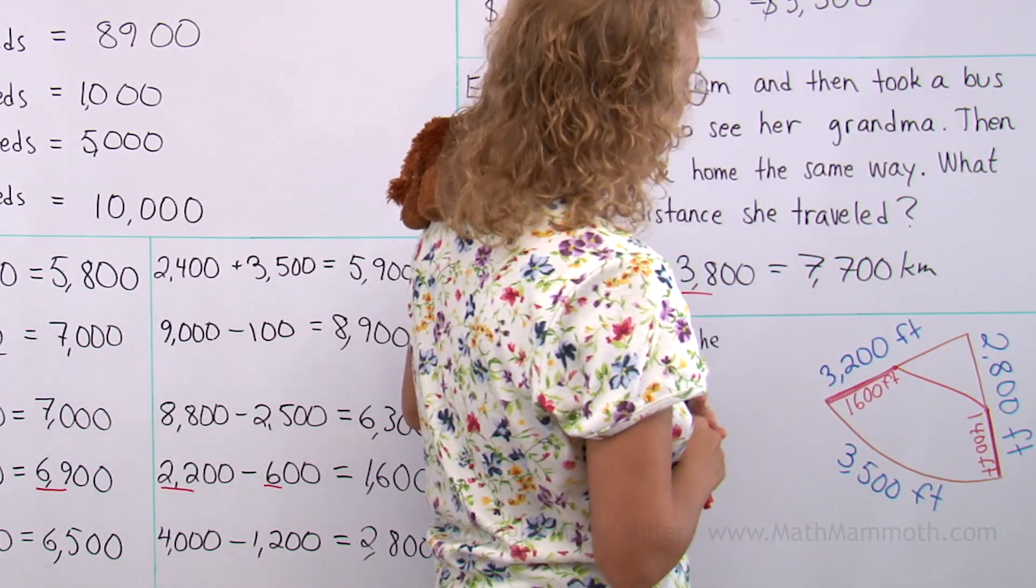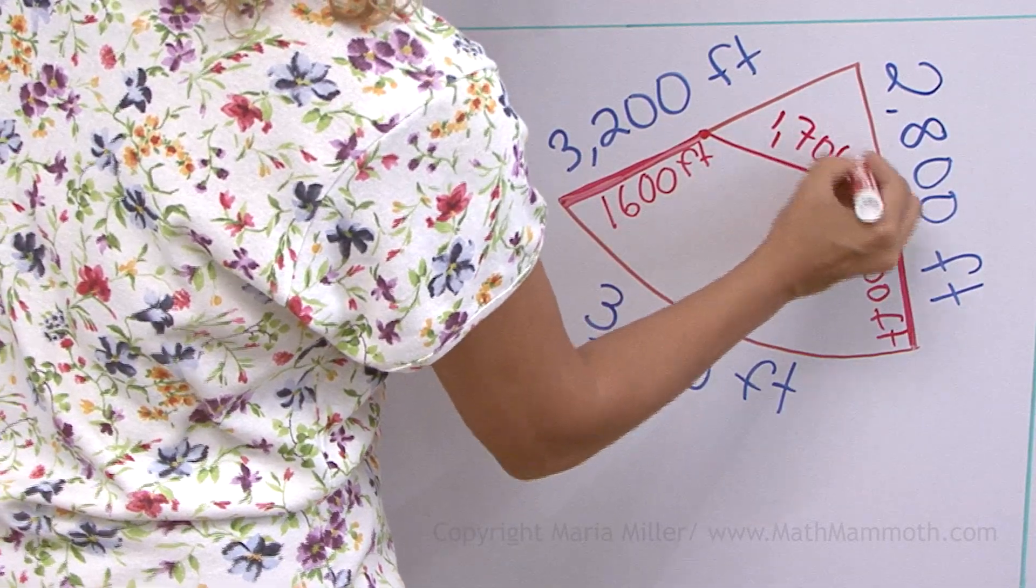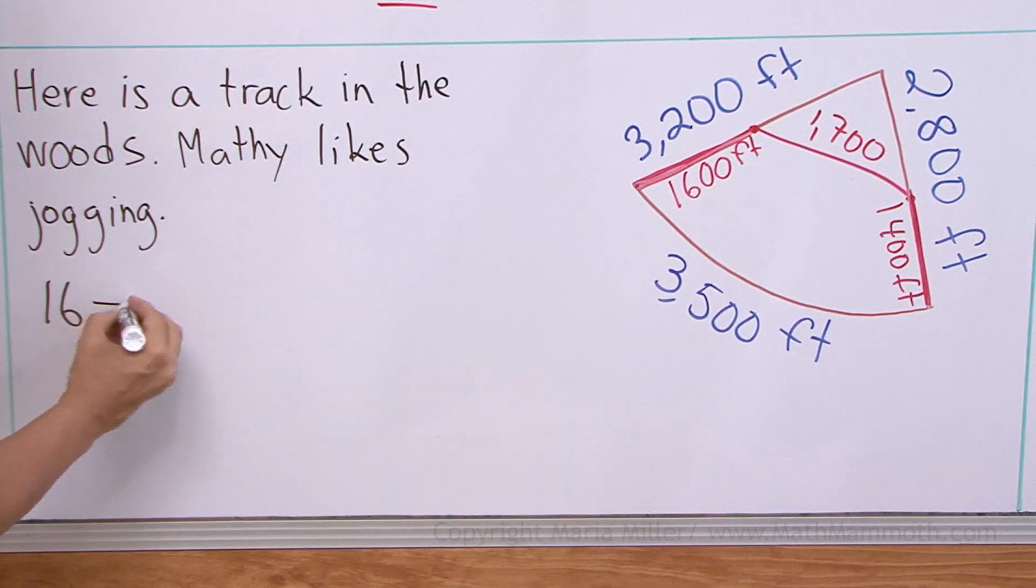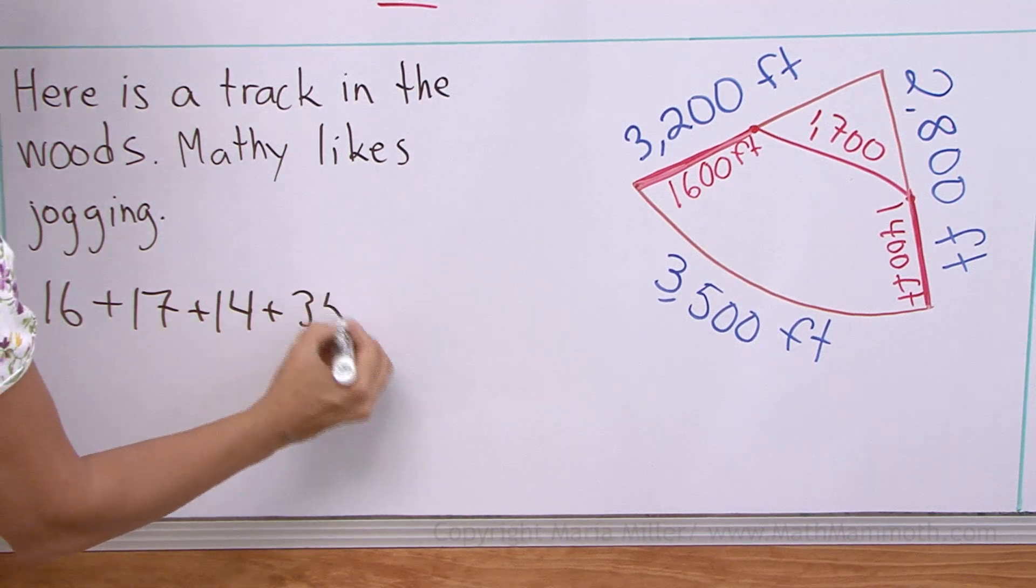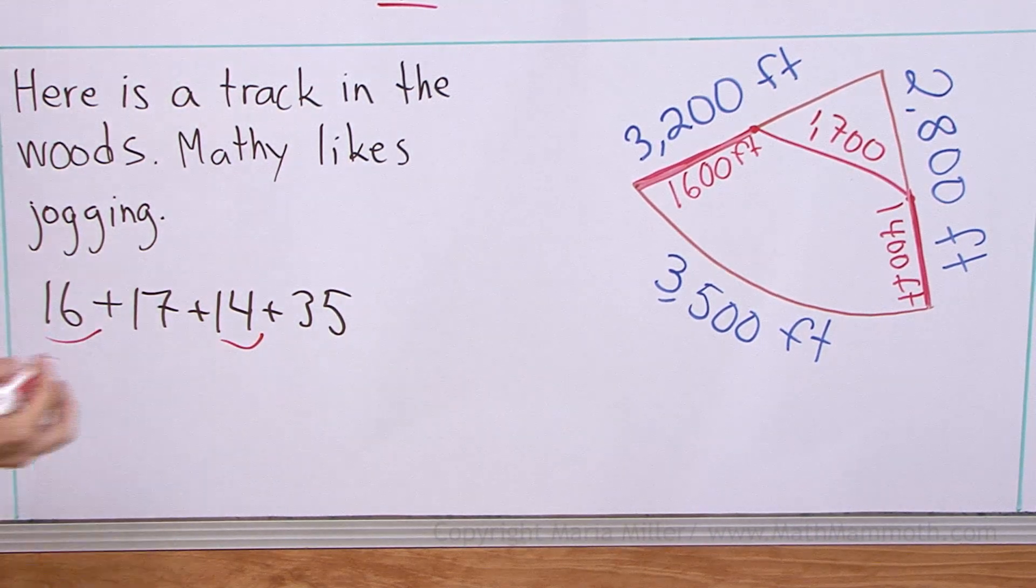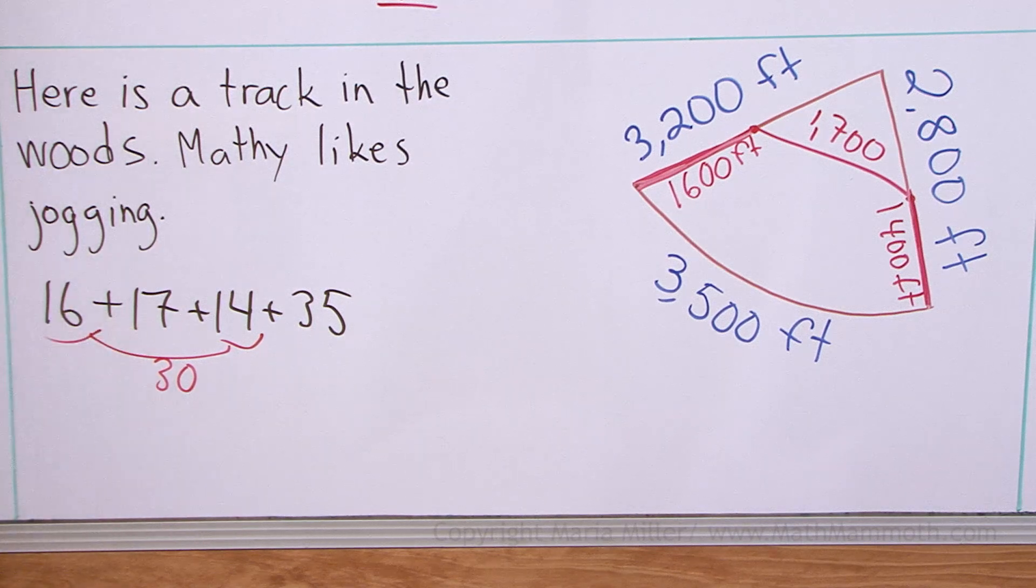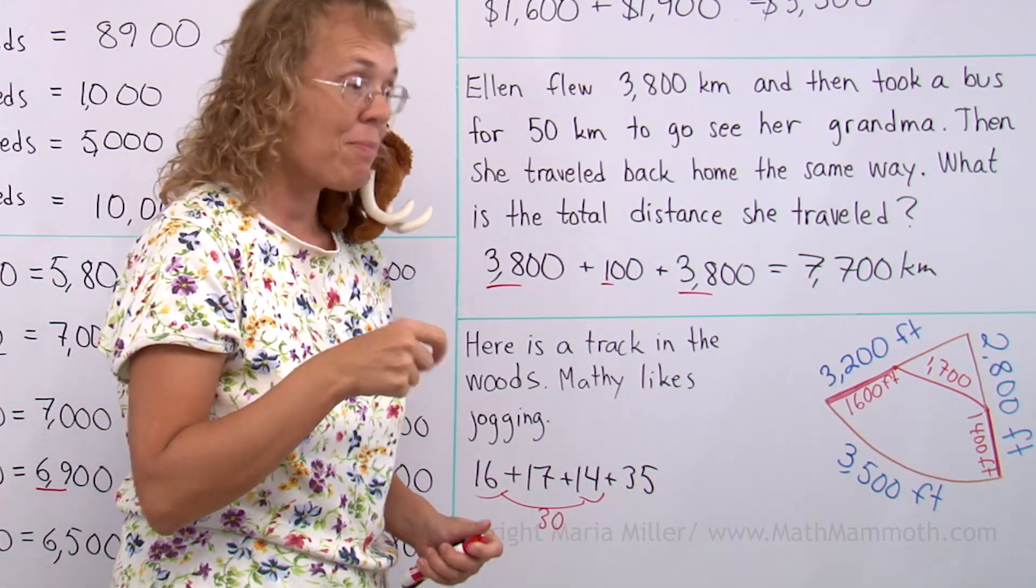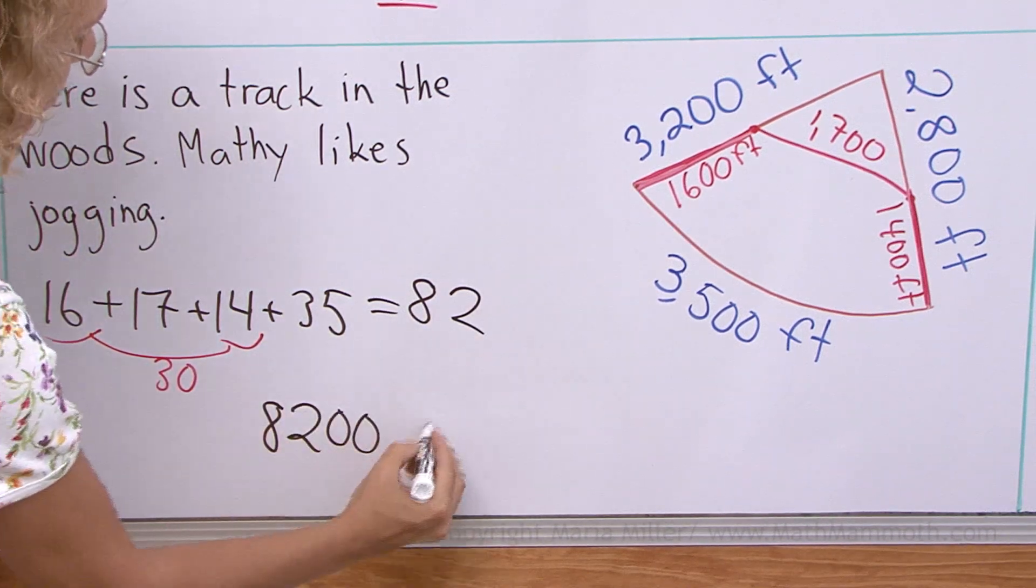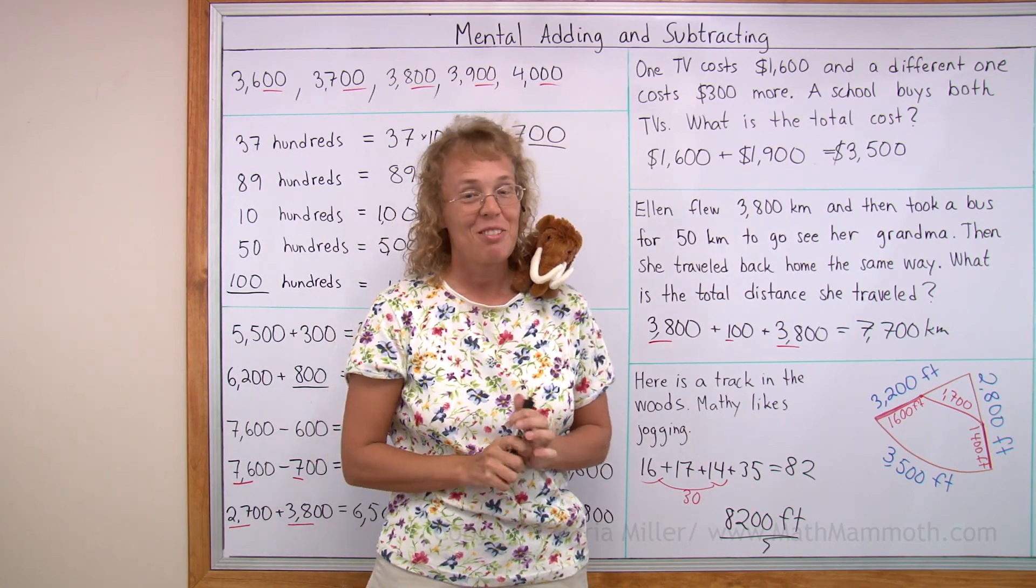We can estimate, okay? If this is 1,600, this is a little bit more. Let's just say this is 1,700. Now you can solve it, right? Add all those numbers. I'm going to save some space and just write here 16 plus 17 plus 14 plus 35. And then we're going to add those zeros. 16 and 14. Add those first. What's that? That's 30. And then 30 and 35, 65. And then 17. 65 plus 17. 75, 82. This would be 82. And then the total distance, 8,200 feet. Okay. So that ended up being a bit complicated, maybe. But I hope you enjoyed it anyway. We're all done with this lesson.